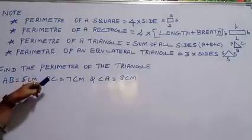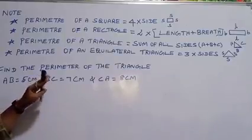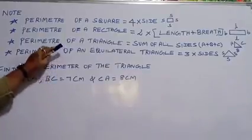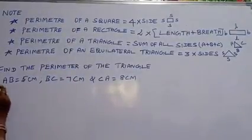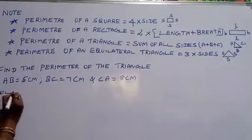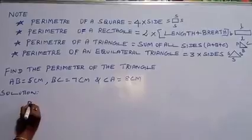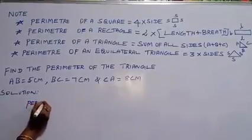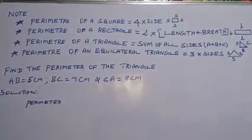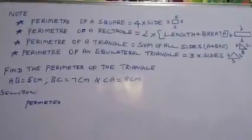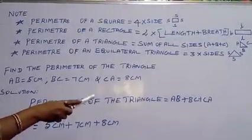So here, both sides have different values, so that is not an equilateral triangle. So you can use the formula: sum of all sides. The perimeter of the triangle equals AB plus BC plus CA.